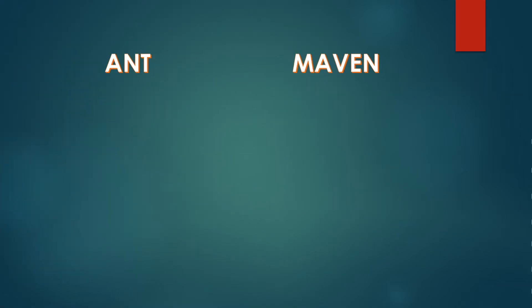Before we learn or implement any new technology, the first thing anyone would ask is what is so special about the new technology that would help me switch to it. Some disadvantages of one technology lead to migration to another that comes with advantages. So before Maven came into the picture, Ant was most widely used. Let's see the differences between Ant and Maven which made Maven more powerful.